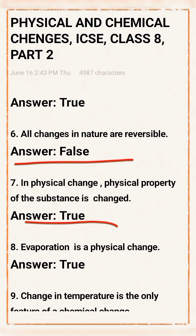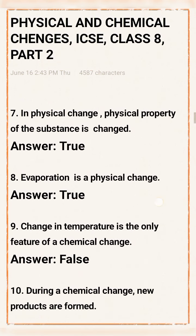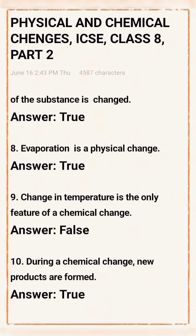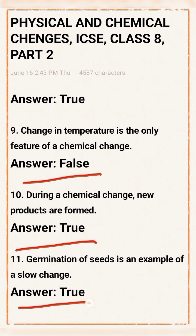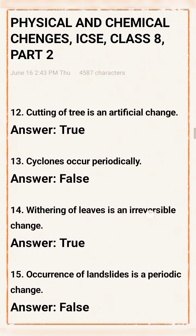Evaporation is a physical change — this statement is true. Change in temperature is the only feature of a chemical change — this statement is false. During a chemical change, certain new products are formed — this statement is true. Germination of a seed is an example of a slow change — statement true.